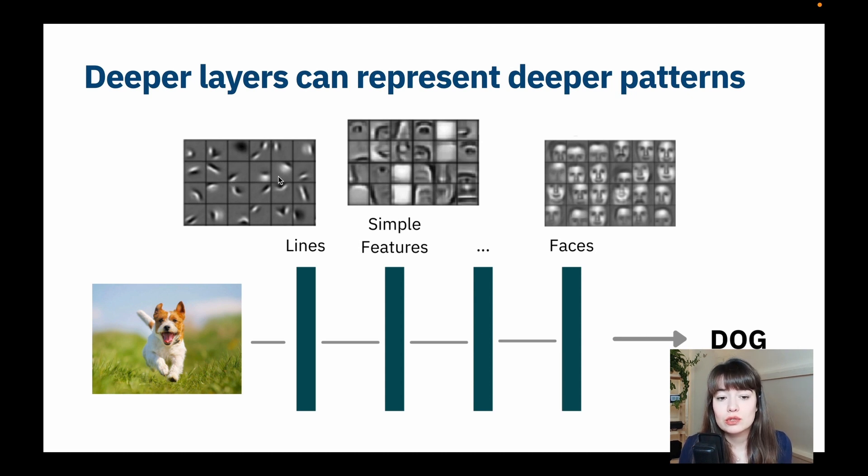vertical lines, horizontal lines, and things like that. And then further in the network, maybe you'll be able to find a nose, an eye, or an eyebrow. And later, towards the end of the network, you will be able to actually recognize or apply your filters to recognize faces or parts of faces, for example.